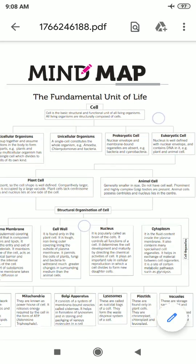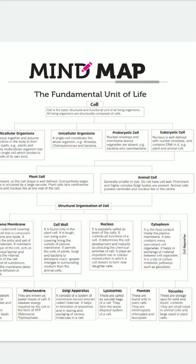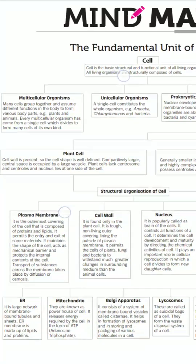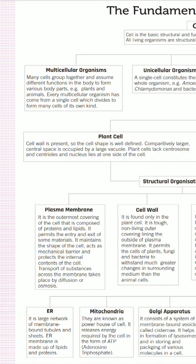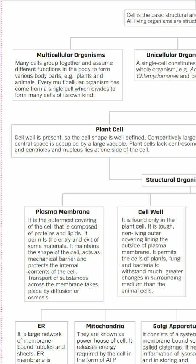Below the cell on the mind map, there are four different boxes: multicellular organisms, unicellular organisms, prokaryotic cells, and eukaryotic cells. On the basis of the number of cells, organisms are divided into multicellular and unicellular. 'Multi' means many, 'cellular' means cells. Organisms which have many cells in their body are called multicellular organisms.